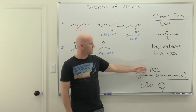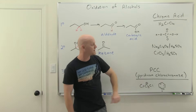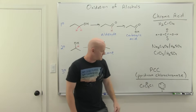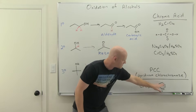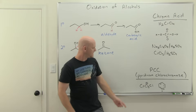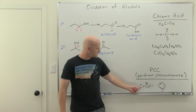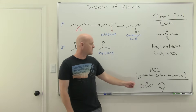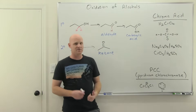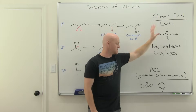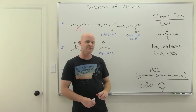The other reagent — the weaker one — is called PCC, which stands for pyridinium chlorochromate. You get it by mixing chromium trioxide, hydrochloric acid, and pyridine together. There's a protonated pyridine molecule — that's the pyridinium — and the chromium trioxide and chlorine end up bonded together in the chlorochromate structure, which serves as the oxidizing agent. Importantly, PCC is used anhydrous, whereas chromic acid is an aqueous reagent. That distinction is critical, as we'll see.